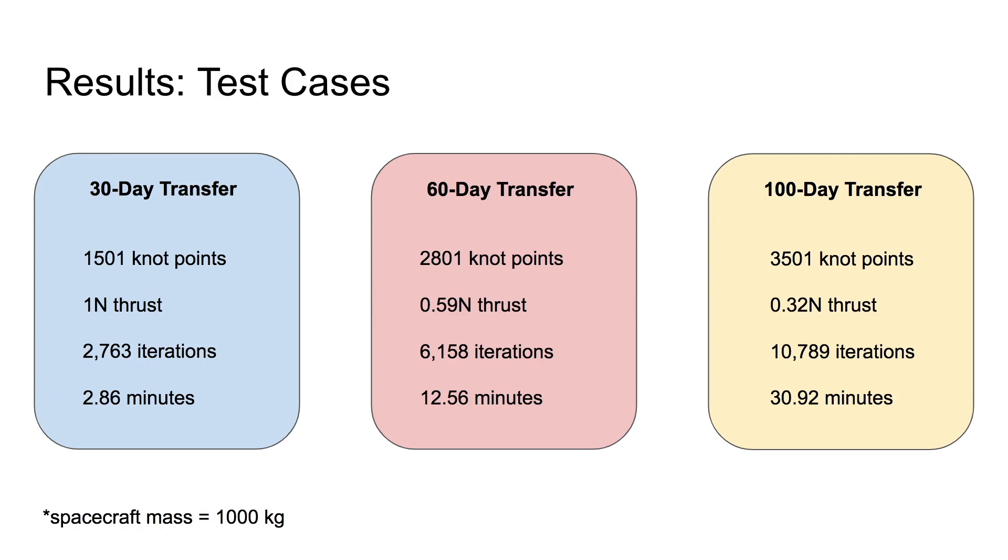For the 100-day transfer, 3,501 knot points were used, the thrust was constrained to 0.32 newtons, the solver converged in 10,789 iterations, and the solve took a little less than 31 minutes. The mass for all spacecraft involved was set at 1,000 kilograms.